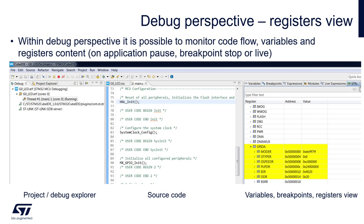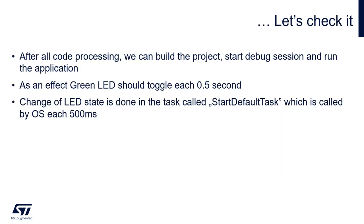Here we can see the most important windows within the debug perspective. On the left there is the project/debug explorer. In the middle we can see our source code where we can put breakpoints by double-clicking on the left margin next to the line number. On the right there is a window with tabs allowing us to display register contents (SFRs), watch variables, or expressions. Let's come back to our application.